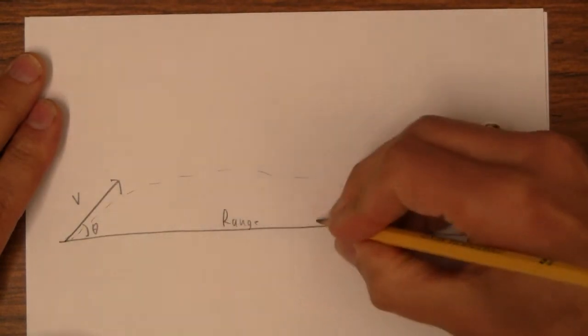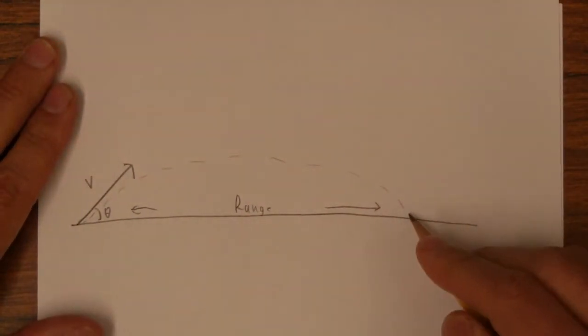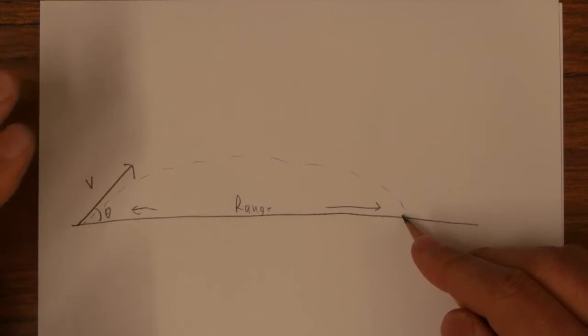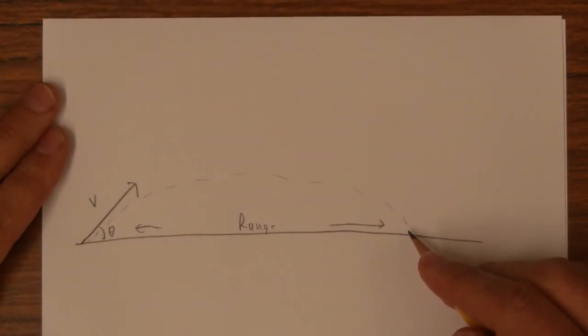So I'm going to call that the range, the horizontal distance it travels before it strikes the ground, and specifically this is like a level thing. So this is of limited use, but it's a good way to check some answers in projectile motion problems.